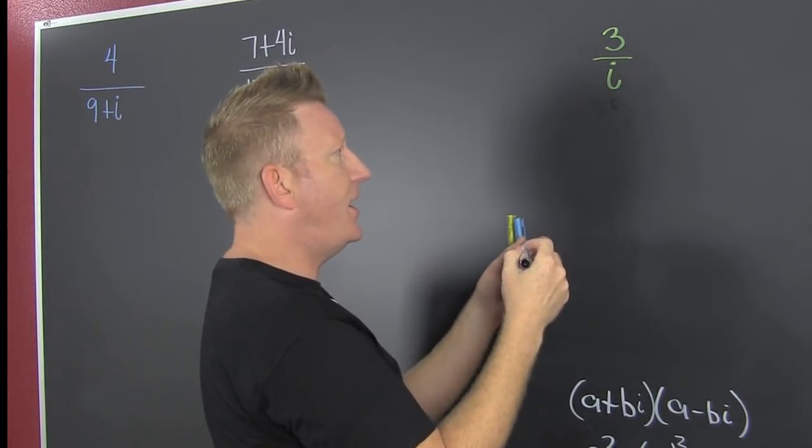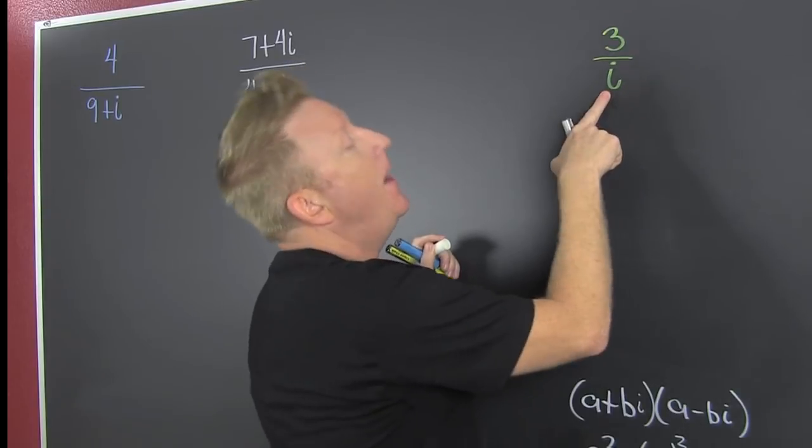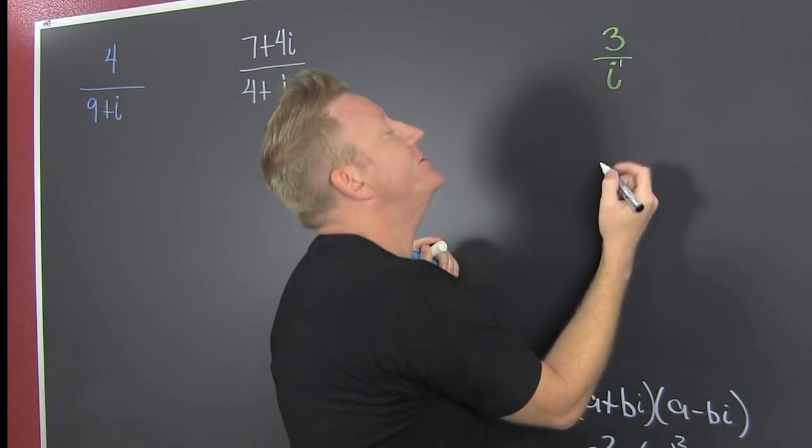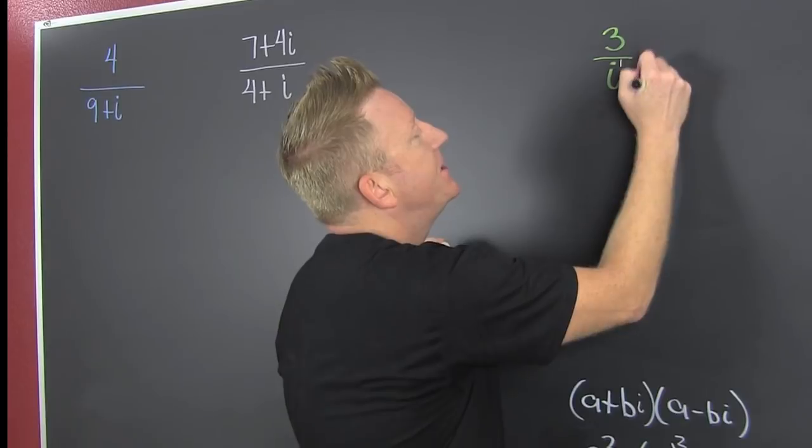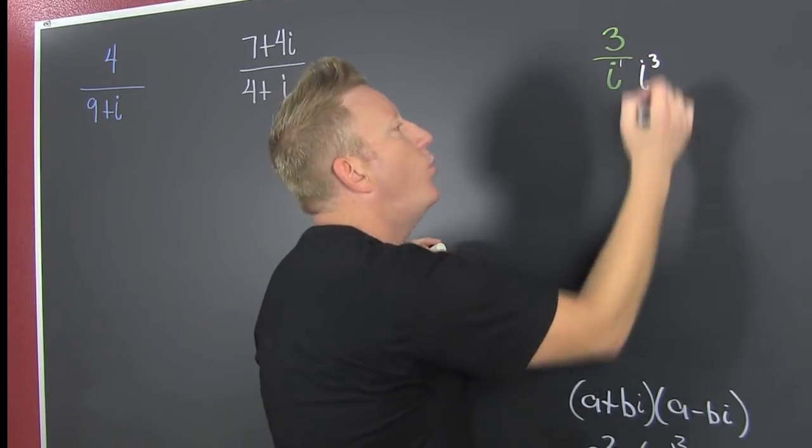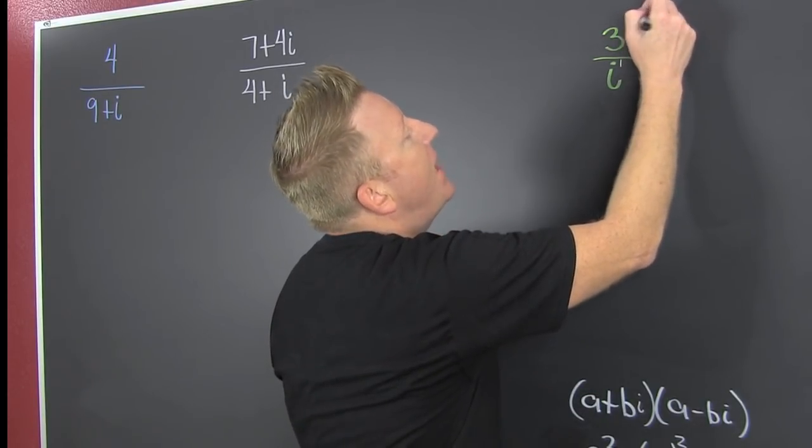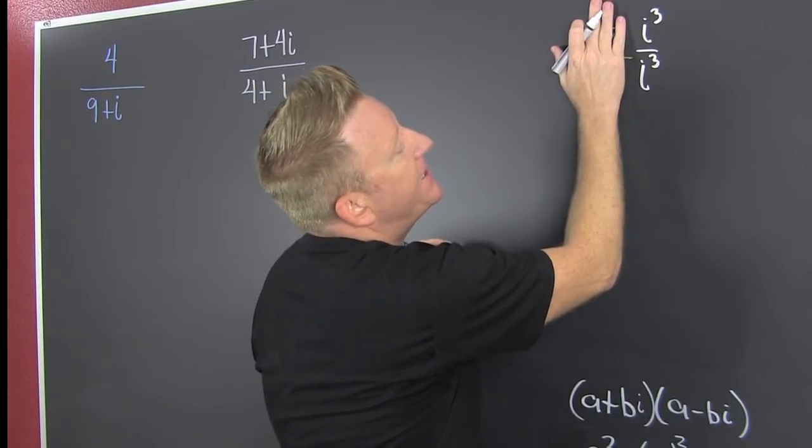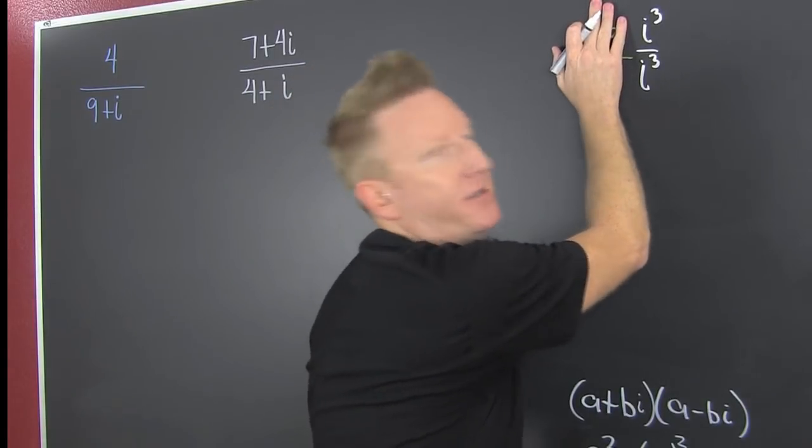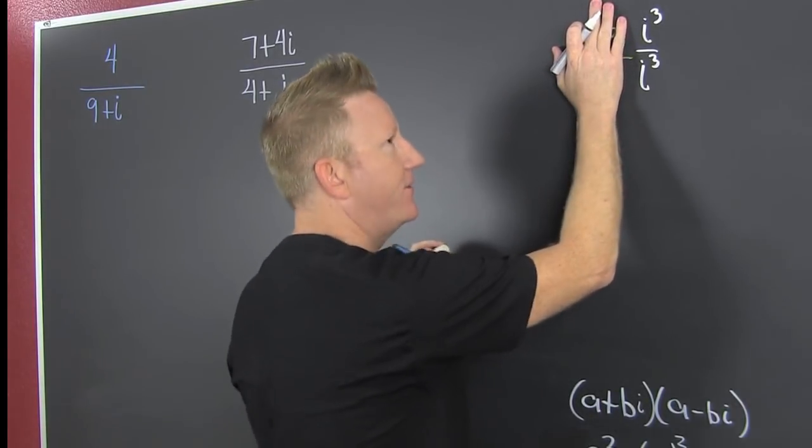Check out powers of i. So then I need to make one into a four. So how many more do I need? I need three. That's why I multiply by the magic one, i to the third divided by i to the third. Wow. That's just like one.